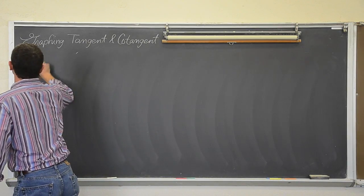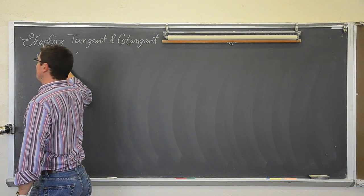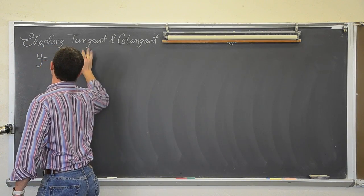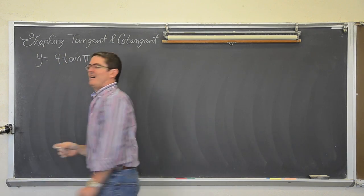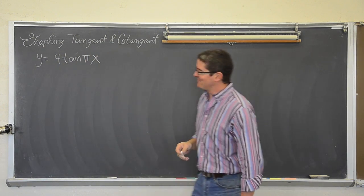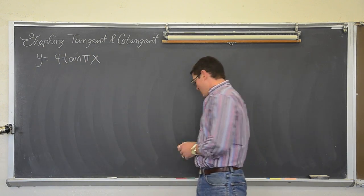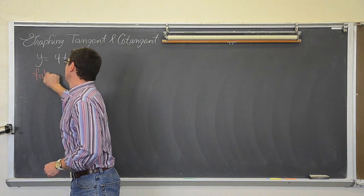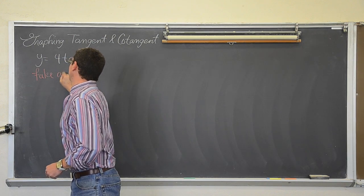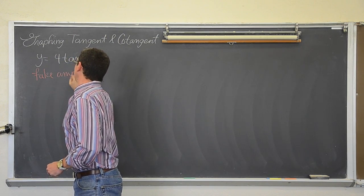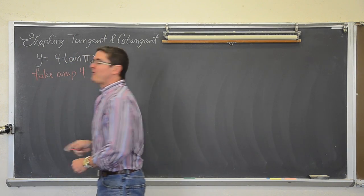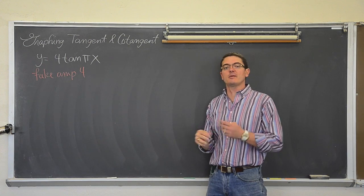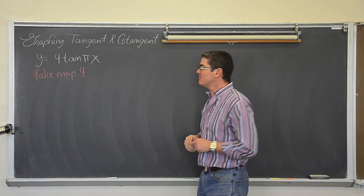We have y = 4tan(πx). Our fake amplitude is 4. So if your numbers on the t-table are not separated by 4 units, you have made a mistake.